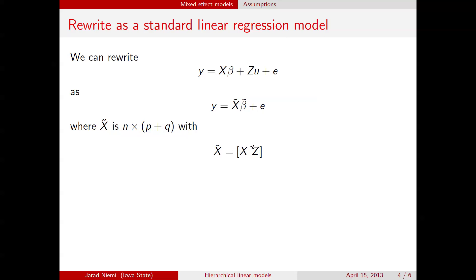X has P columns, Z has Q columns, so X tilde is N by P plus Q. So then obviously beta tilde here is going to have to be a P plus Q times 1 vector. And basically now we're just going to concatenate beta and U, and basically this time we're going to stack them on top of each other so that we have a P plus Q times 1 vector.